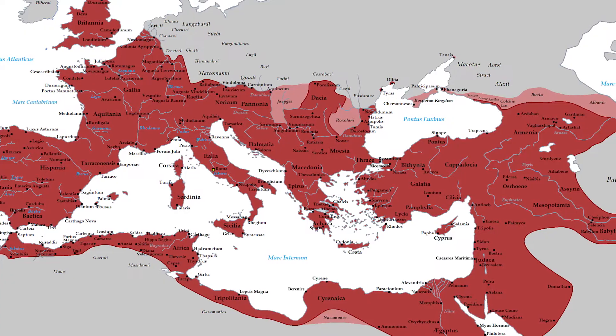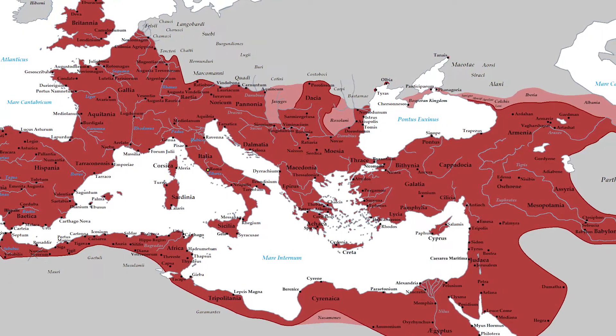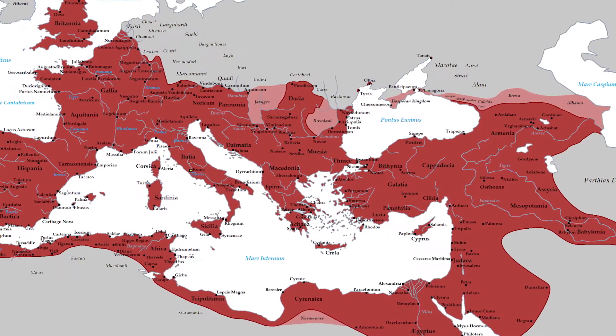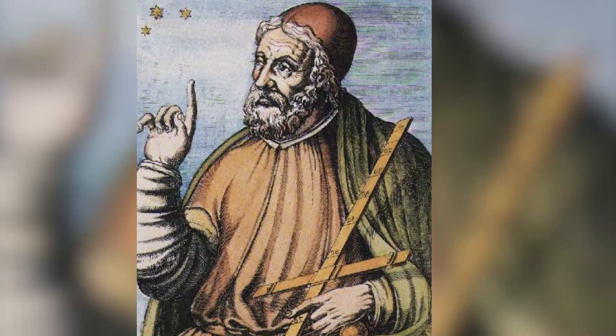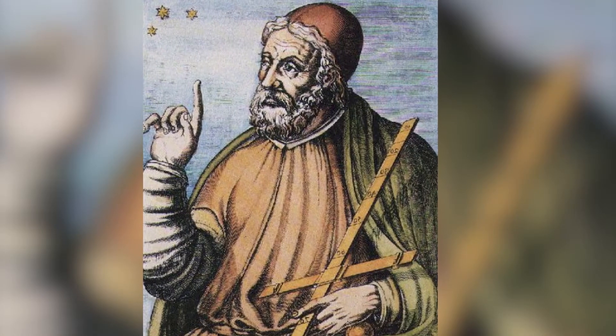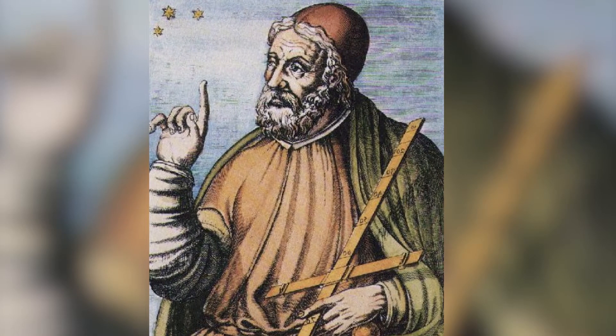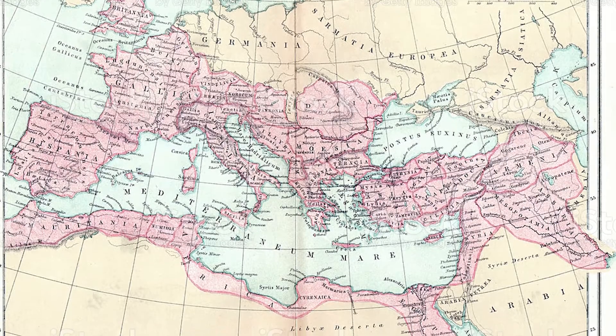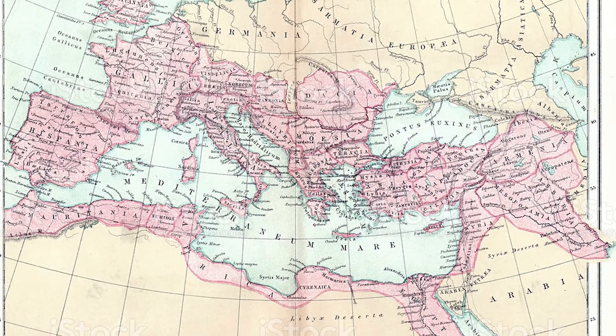The Fortune Isles — then the westernmost point of land known to the Roman Empire — were defined by Ptolemy as the Prime Meridian. The shape of the known world was okay,